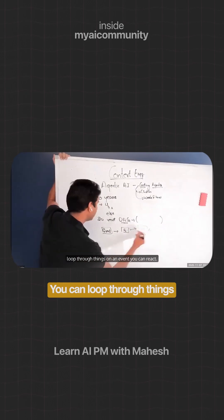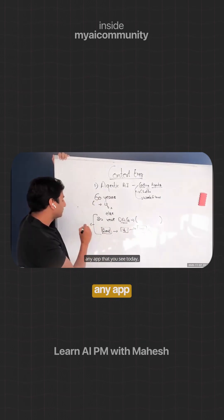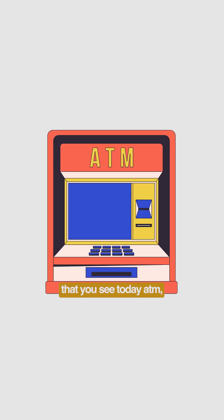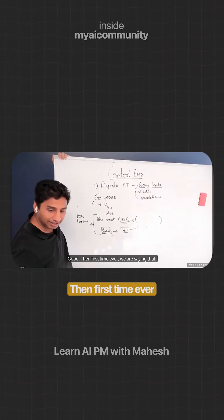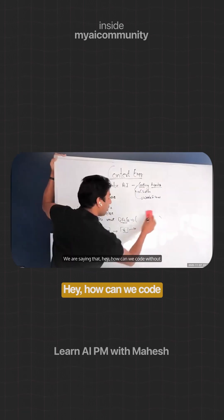You can loop through things, on an event you can react. Any app that you see today - ATMs, your Facebook - is based on some kind of directed acyclic graph. Then, for the first time ever, we are saying, hey, how can we code without doing or knowing our directed acyclic graph?